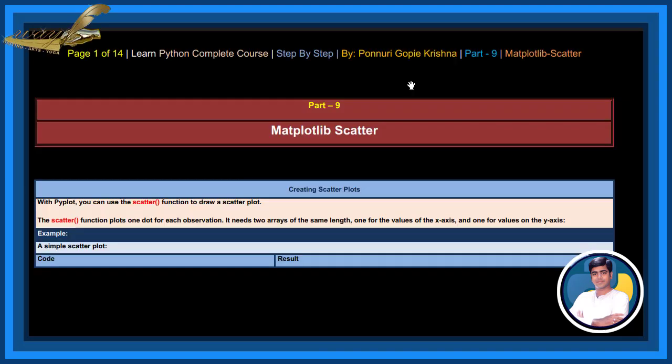In this session, let us learn about matplotlib scatter, creating scatter plots. With Pyplot, you can use the scatter function to draw a scatter plot. The scatter function plots a dot for each observation. It needs two arrays of the same length, one for the values of the x-axis and one for the values on the y-axis.